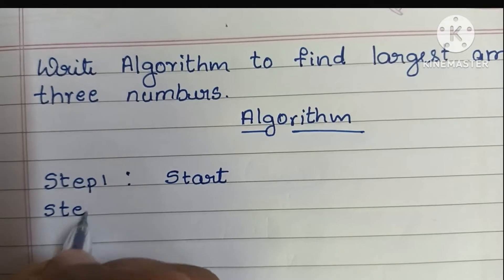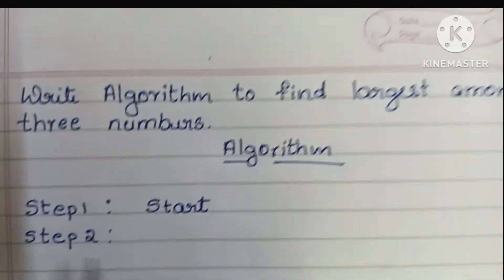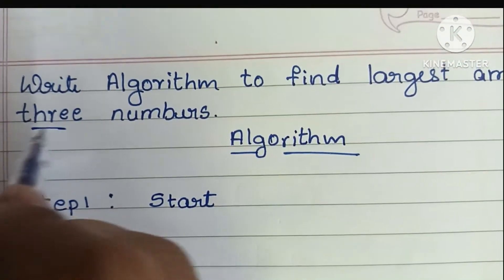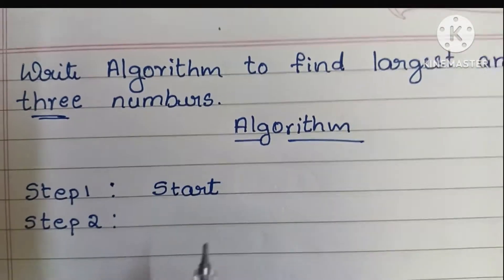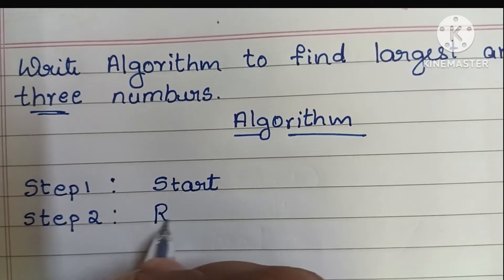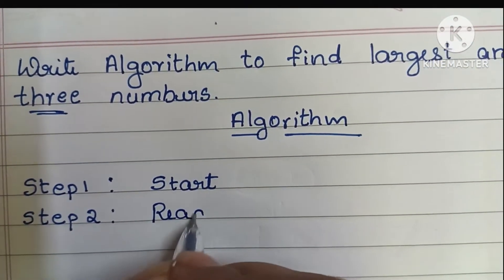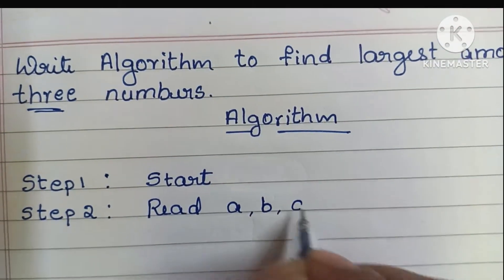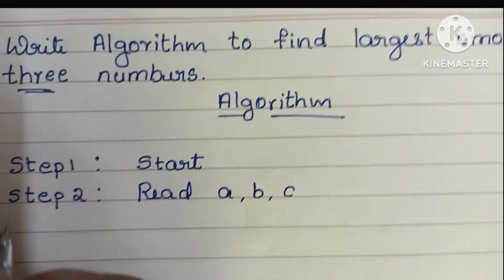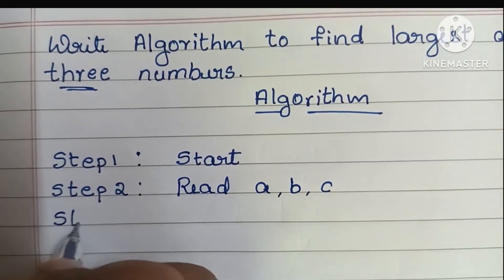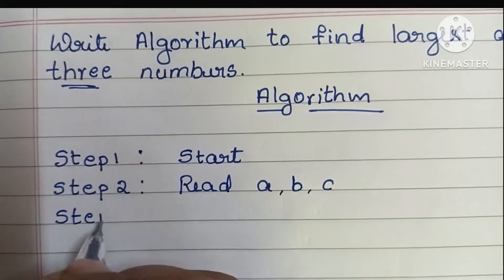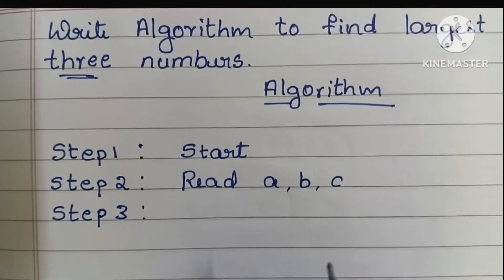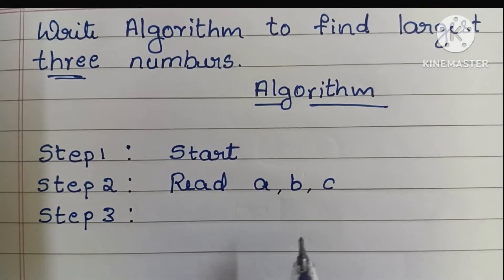Step 2: we have to read input values. Here we have to find the largest among three numbers, so we have to read three numbers — read a, b, and c.